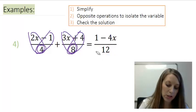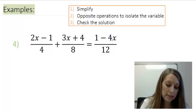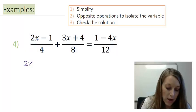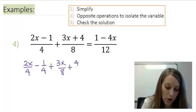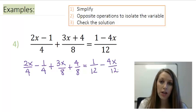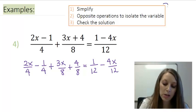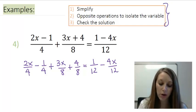So let me get rid of this scratch work here and let me show you exactly how that looks. That gives me 2x over 4 minus 1 fourth plus 3x over 8 plus 4 eighth is equal to 1 over 12 minus 4x over 12. So I've changed it from three big fractions to six small fractions. Now it's going to be much simpler to follow these steps that I've outlined for you.